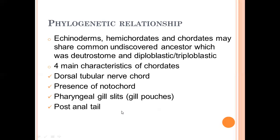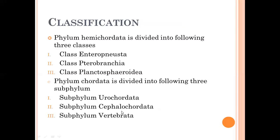So this was the phylogenetic relationship. The main focus is that echinoderms, hemichordates, and chordates share common ancestry, and the ancestor is still undiscovered. Then is the classification. The classification is complicated because it is a big group.